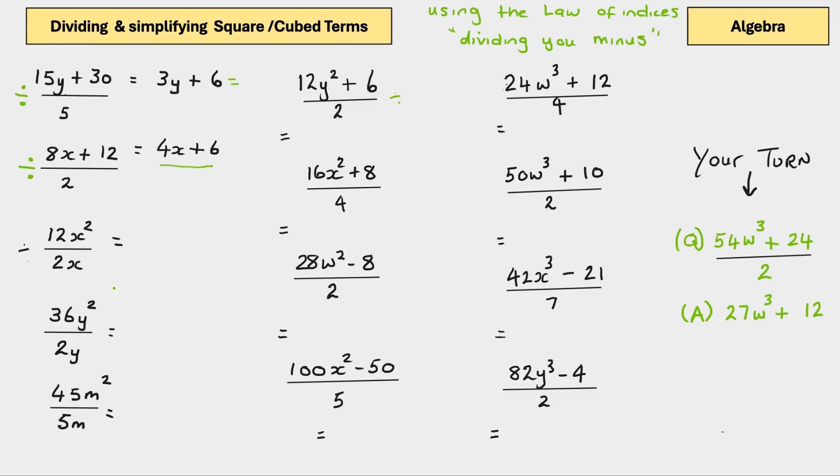Right. Now, we're going to use these rule of indices. 12x squared divided by 2x. 2 divided by 12 is 6. That's great. We understand that. So, using the minus one, if you think this is 2 lots of x's, we've got 1x, but we've got to subtract this x.